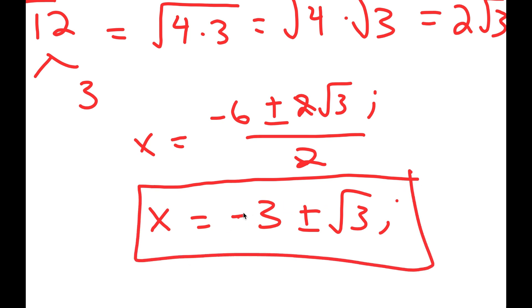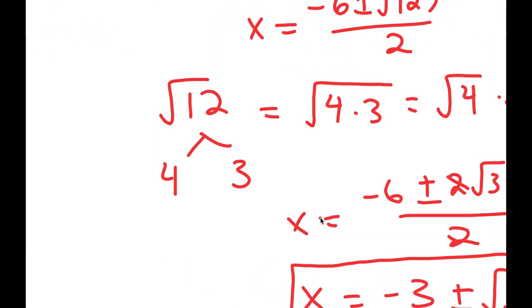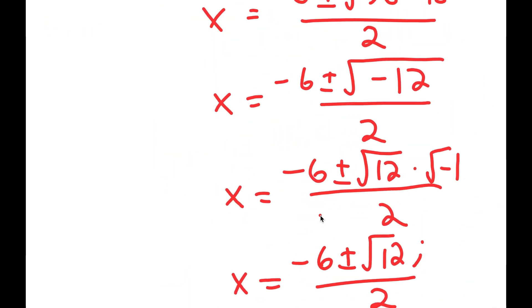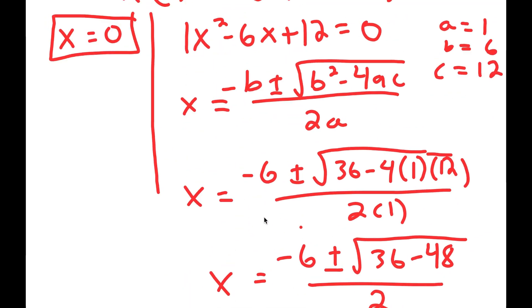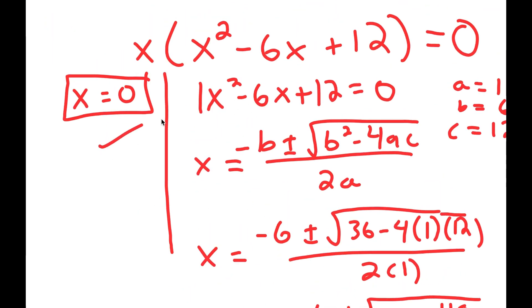So my three solutions are x is equal to negative 3 plus the square root of 3 i, x is equal to negative 3 minus the square root of 3 i, and x is equal to 0.